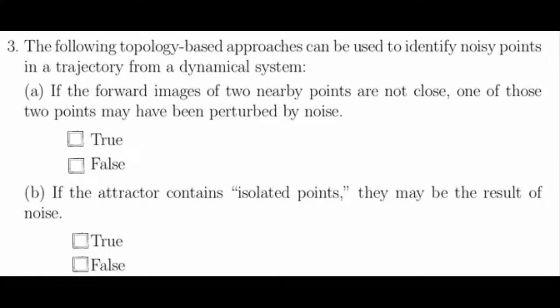For question 3, we're interested in the following topology-based approaches for identifying noisy points in a trajectory from a dynamical system. Part A asks if the forward images of two nearby points are not close, one of those two points may have been perturbed by noise. And this is true. If the forward images of two nearby points are not close, this would violate the continuity properties of the dynamical systems we are looking at.